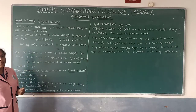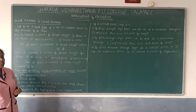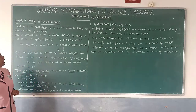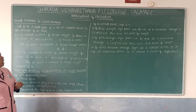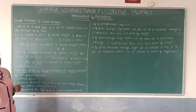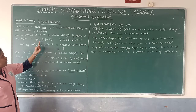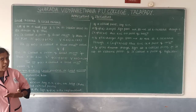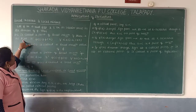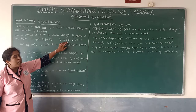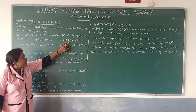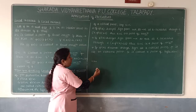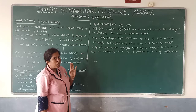Now let us discuss local maxima and local minima. Let F be a real-valued function and c be an interior point in the domain of F. Then F is said to have a local maximum at c if there exists h > 0 such that F(c) ≥ F(x) for all x in (c − h, c + h). The interval (c − h, c + h) is a neighborhood around c — for example, if c = 3 and h = 2, we get the interval (1, 5).